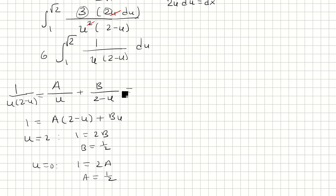So then this is just 1 half over u plus 1 half over 2 minus u. Okay, so that's what we have here.